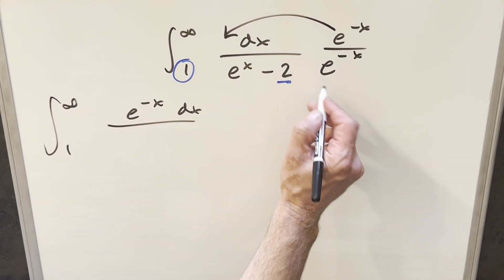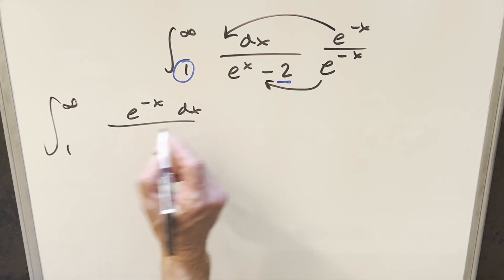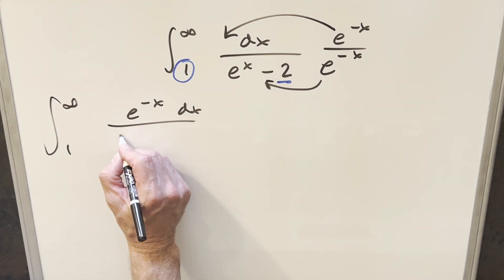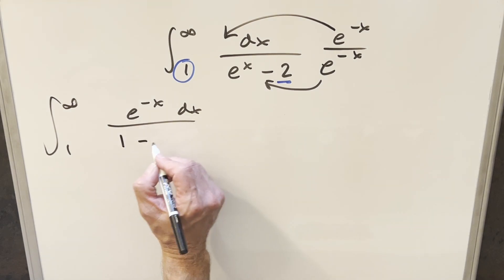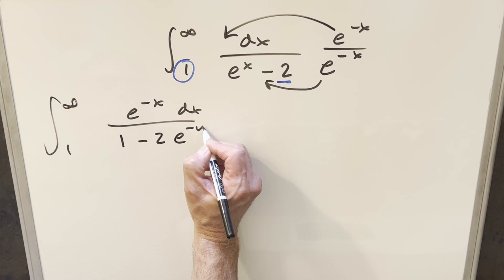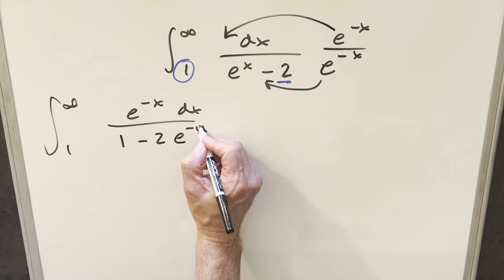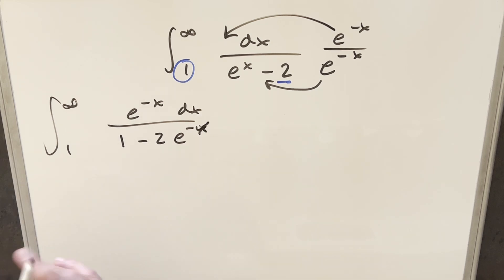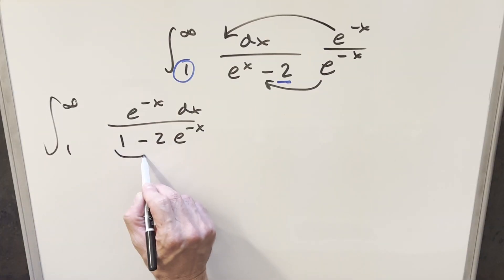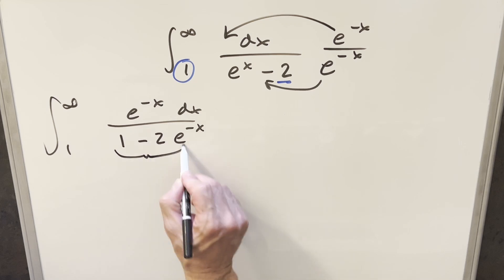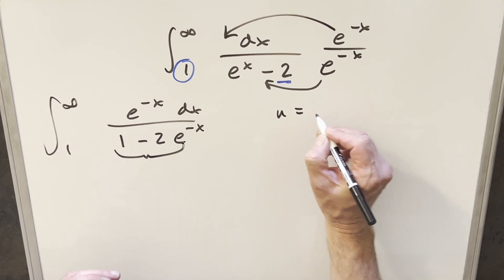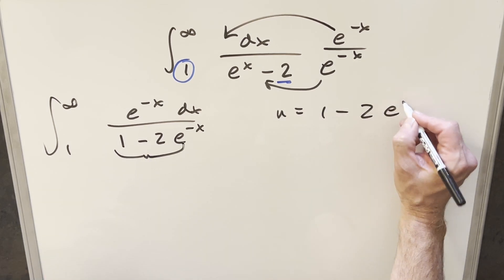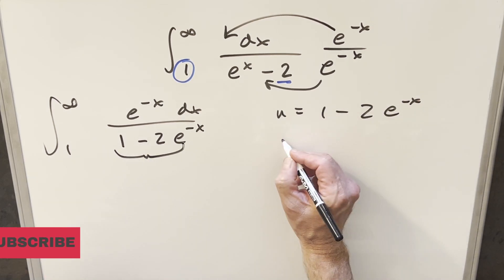In the denominator, e to the minus x times e to the x just gives me 1, and then the other term is going to be minus 2 e to the minus x. So from here, let's go ahead and do a u-substitution for the whole denominator. We'll say u equals 1 minus 2 e to the minus x.